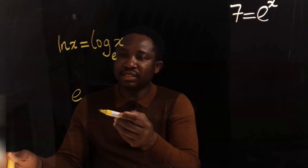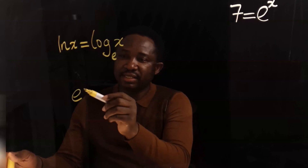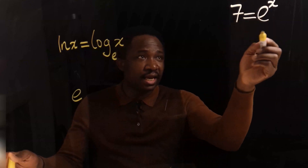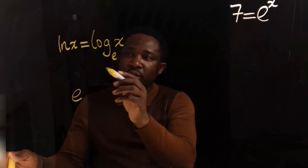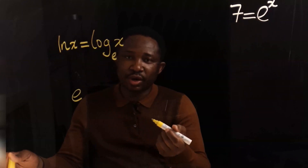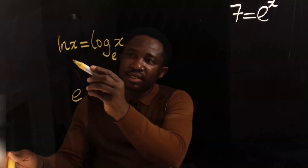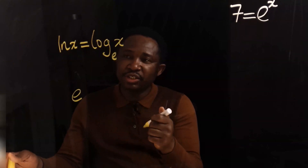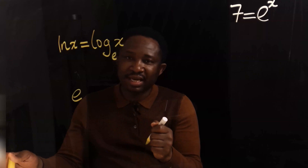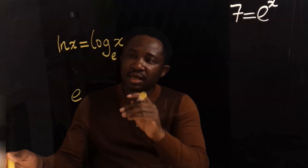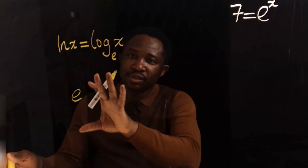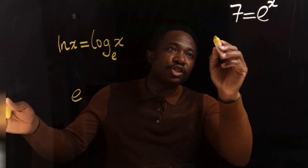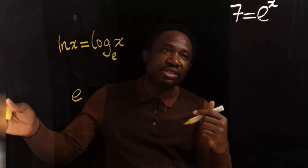Whenever you want to release x from exponential, like in this case, you are going to introduce natural log. Natural log and exponential oppose each other in mathematics. Hence, because of this law, we are going to take the natural log of both sides.